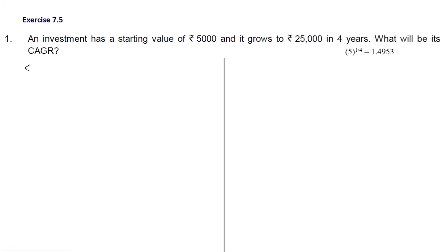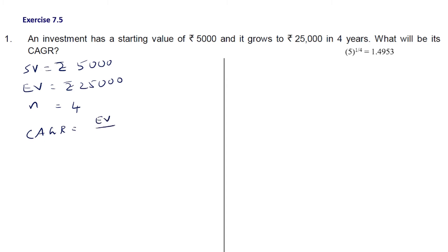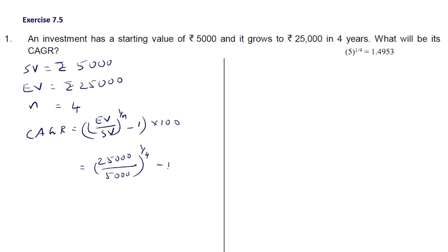So here the starting value is rupees 5000, the ending value is rupees 25000, and the number of time periods is 4 years, so N is 4. We have compound annual growth rate as ending value upon starting value, the whole raised to 1 by N, minus 1, into 100. Substituting: 25000 upon 5000, the whole raised to 1 by 4, minus 1, into 100. This simplifies to 5 raised to 1 by 4, minus 1, into 100.